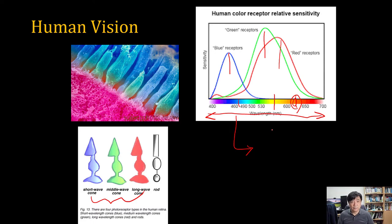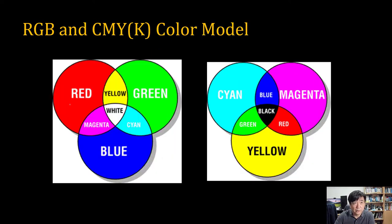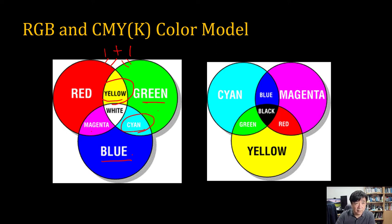For example, if you are watching an LCD monitor, it only displays red, green, and blue. But you can see magenta, cyan, or yellow. If we add red and green, we feel yellow. If we add blue and green, we feel cyan. If we add red and blue, we feel magenta. If we add all three — red, green, and blue — we feel white light. That is the RGB color model.